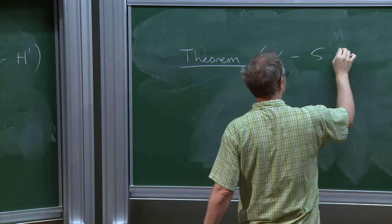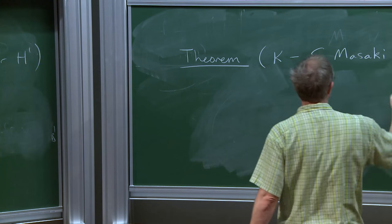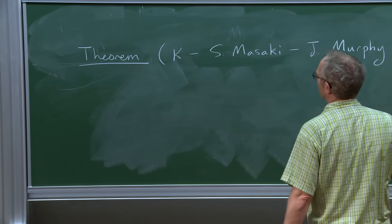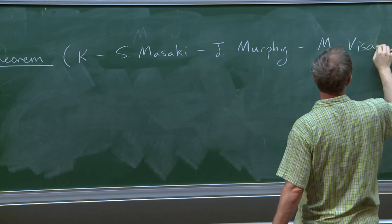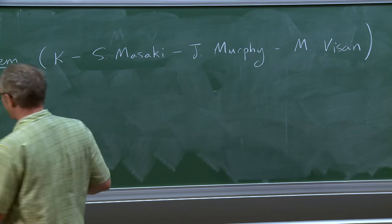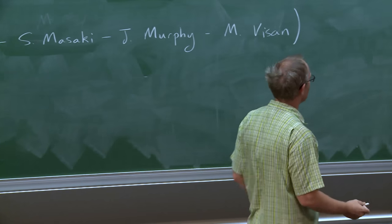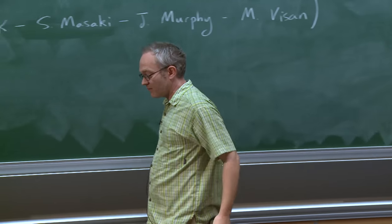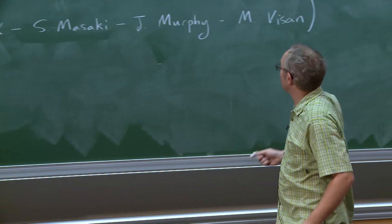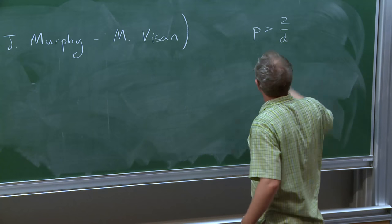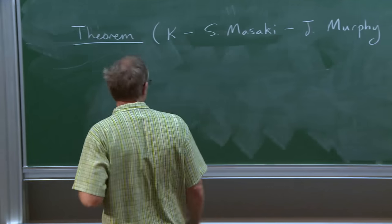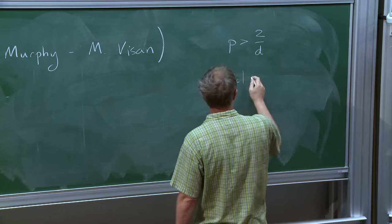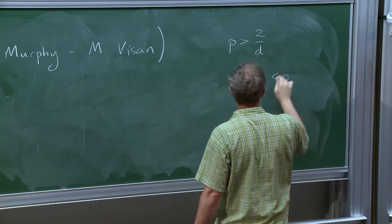This is joint work with Satoshi Masaki, now in Osaka; Jason Murphy, currently in Berkeley; and Monika Vişan, currently in the audience. There are a couple of conditions. One: mass subcritical, because that's what I'm talking about. Second: I said the word scattering, and unless your nonlinearity has a big enough power, this is simply not going to happen—you need a little bit of power in the nonlinearity. There's also a technical condition that's not the thing we're most eager to change: SC is negative—that's what we're talking about—and it has to be more than minus one.